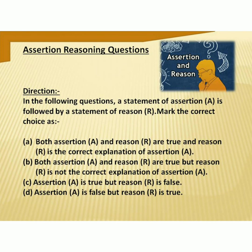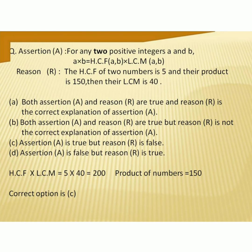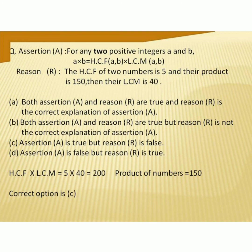Next are assertion-reasoning questions. Two statements are given — assertion and reason — and you must analyze them and choose the correct option. Assertion: For any two positive integers A and B, A × B = HCF × LCM. Reason: The HCF of two numbers is 5 and their product is 150; their LCM is 40. The assertion is true — we already discussed this result. To verify the reason: HCF × LCM = 5 × 40 = 200, but the product of the numbers is 150. So the reason is false. Assertion is true, reason is false. The correct option is C.